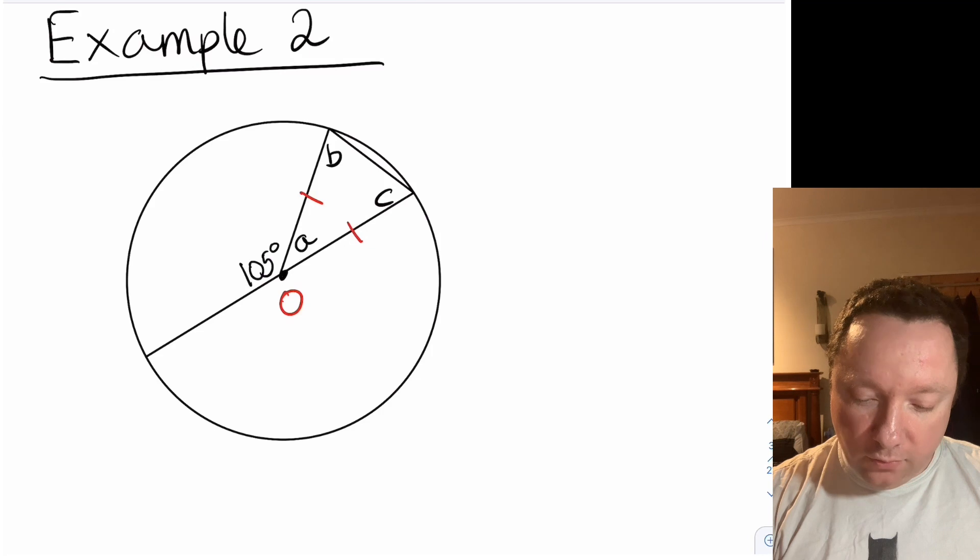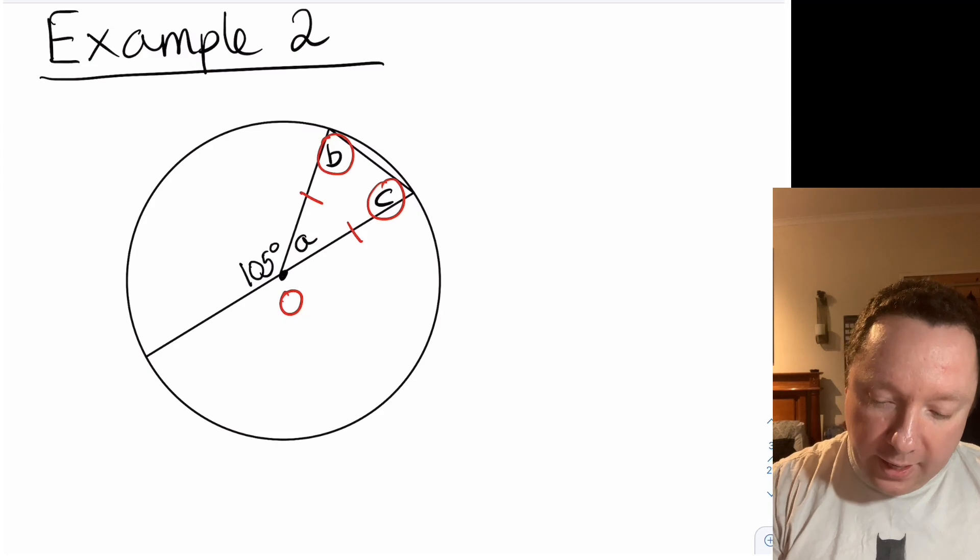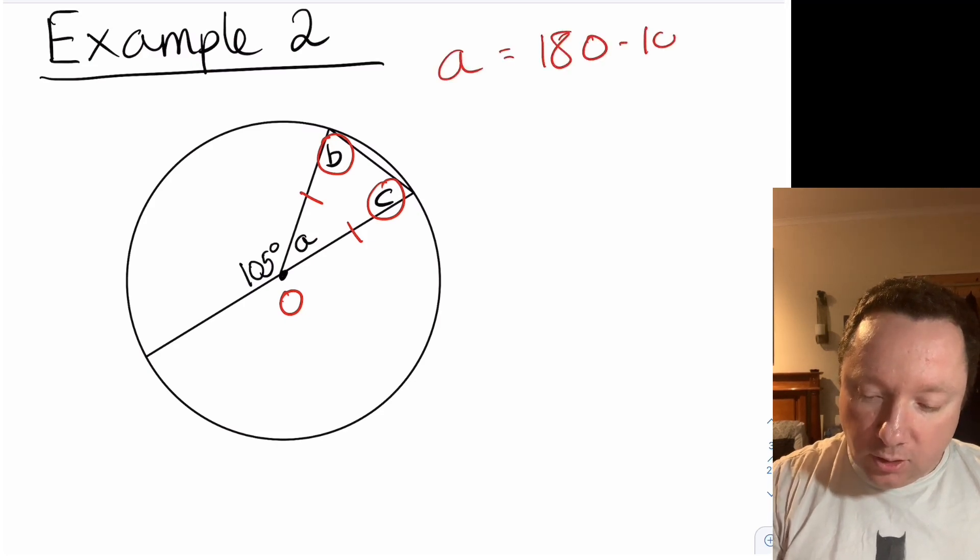There's our center, so there's our radius, there's another radius, so those two are the same which means b and c are going to be the same at the end. But I don't know a yet, but I can work it out because angles on a straight line add up to 180. So a equals 180 minus 105.